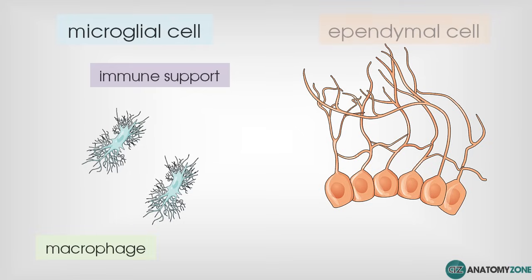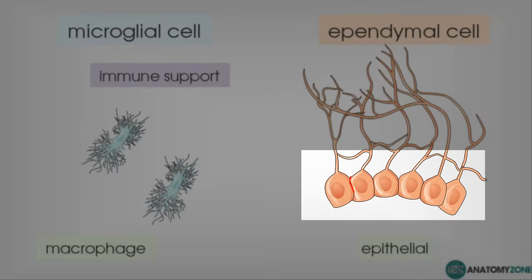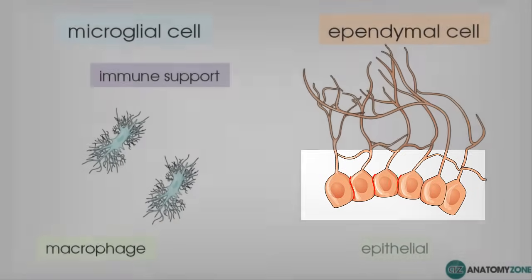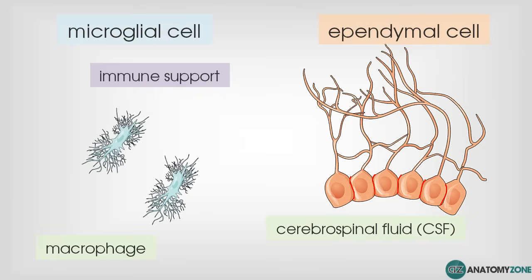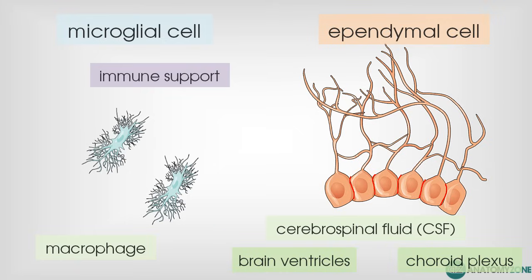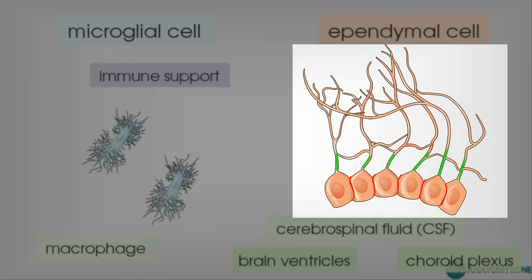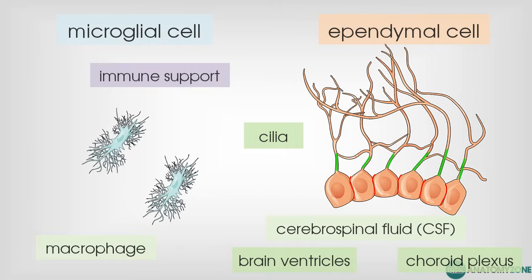The ependymal cells are similar in appearance to epithelial cells — the cells are tightly adherent to each other. The function of ependymal cells is to filter blood to make cerebrospinal fluid (CSF), which flows through the CNS and lubricates and protects neural structures as a cushion. CSF is produced in the brain ventricles, and ependymal cells are found in a specialised area within the brain ventricles known as the choroid plexus, where they are in contact with blood vessels. The ependymal cells also have extensions called cilia, which waft the CSF through the ventricular system.